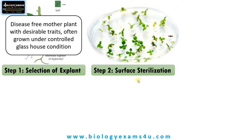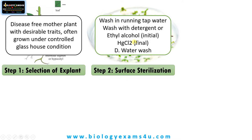Surface sterilization of the explant begins with keeping the explant under running tap water many times. Then we wash the explant in a detergent or treat it with ideal alcohol, followed by further washing with distilled water. Then we take the explant into the laminar air flow hood, which provides a sterile environment for tissue culture work. In the laminar air hood, we treat the explant with surface sterilants like mercury chloride — often 0.1% is used. This is very toxic, so after that treatment we wash it once again many times with distilled water.